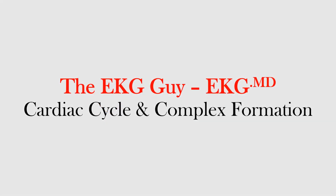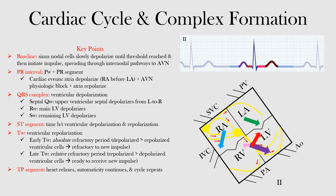In this lecture, we will discuss how the cardiac cycle relates to the complex formed on the EKG — the cardiac cycle and complex formation. We're finally putting the electrical activity in the heart and correlating it to what we see on the EKG. We have a box diagram of the heart and one lead. We will assume this is lead two throughout the lecture. Lead two is a limb lead and sits at positive 60 degrees in the frontal plane.